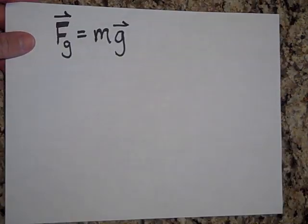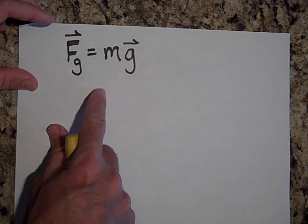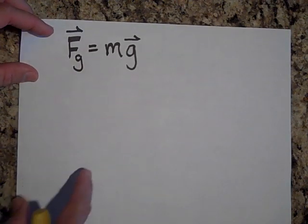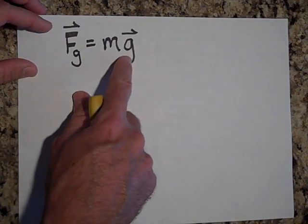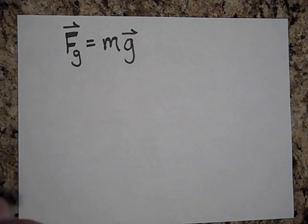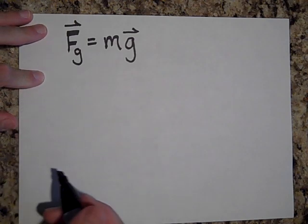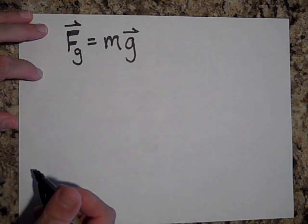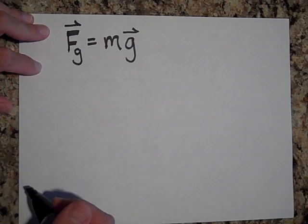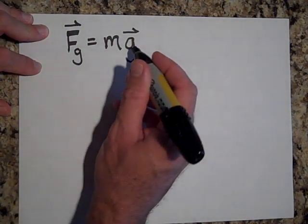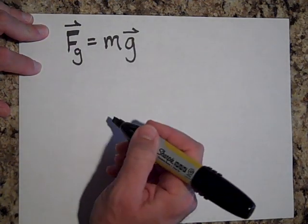If we want to know the force on an object of mass m and if it's near the surface of the earth, then all we have to do is multiply the mass times the acceleration due to gravity, and that gives us the force. Now a couple things here. The g then has two names. We're going to give that two names.